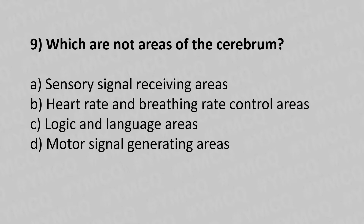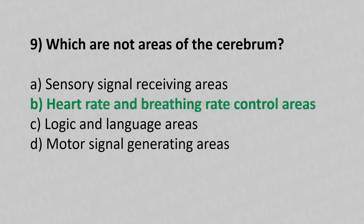Question 9: Which are NOT areas of the cerebrum? Option A: sensory signal receiving area. Option B: heart rate and breathing rate control areas. Option C: logic and language areas. Option D: motor signal generating areas. The answer is Option B — heart rate and breathing rate control areas.